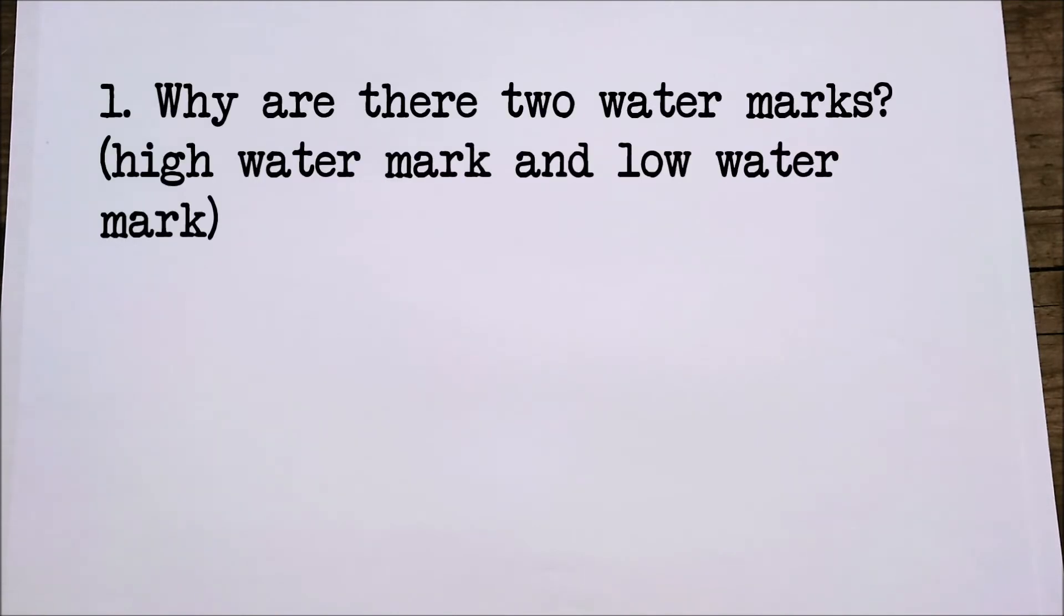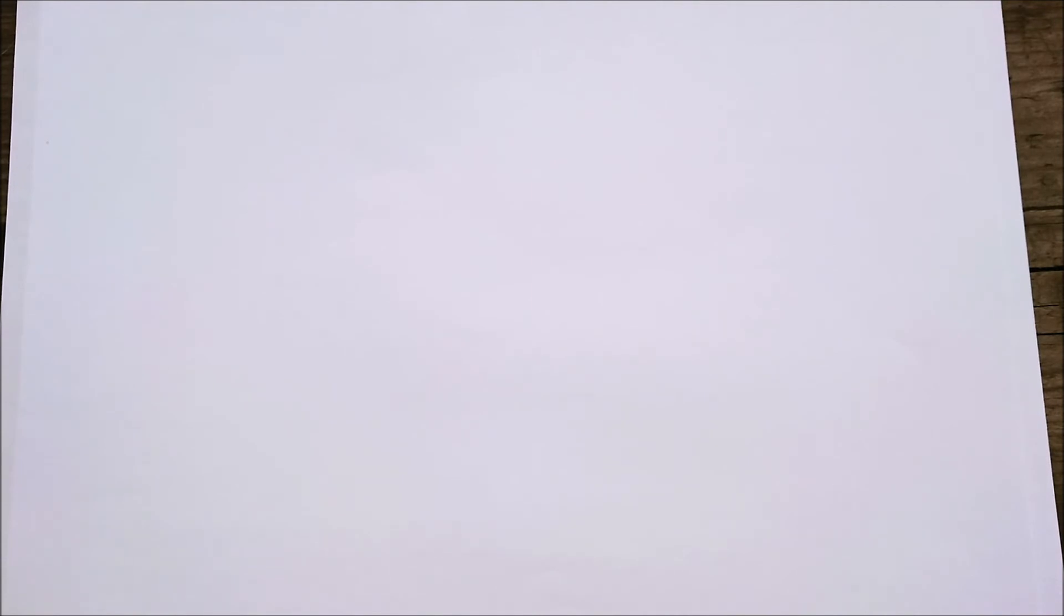Let's recap cliff formation. Question one: why are there two watermarks, a high watermark and a low watermark? Well, high watermarks and low watermarks mark the incoming and outgoing of the tides, so the high tide and the low tide.